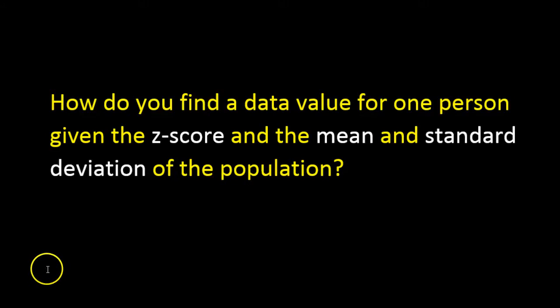In this video, I will show you how to find a data value for one person if you're given three things: the z-score that corresponds to that particular value, and the mean and standard deviation of the population.